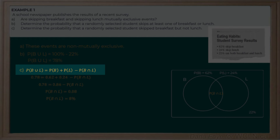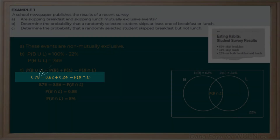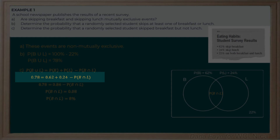The probability of skipping breakfast or lunch equals the probability of event B plus the probability of event L, minus the intersection. We just determined that 78% of students skip at least breakfast or lunch, so we write that as 0.78 on the left-hand side. We know 62% skip breakfast, so P(B) = 0.62, and the probability of skipping lunch is 0.24. We want to solve for the intersection.